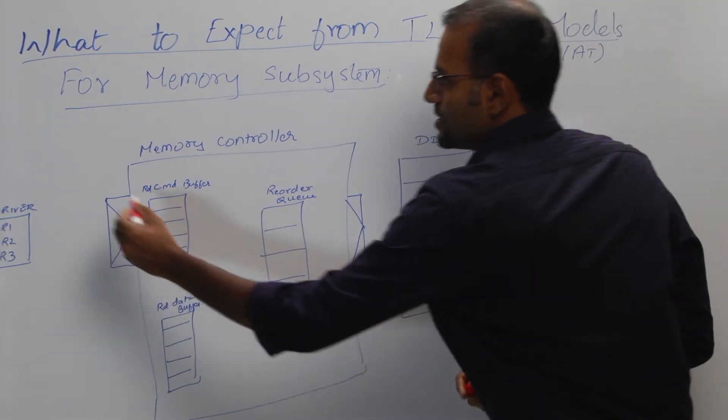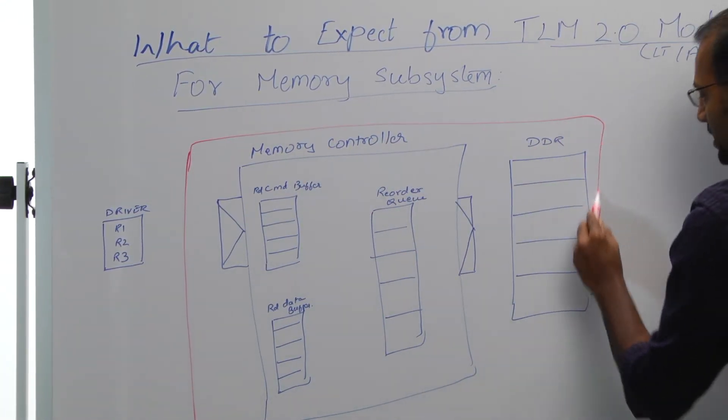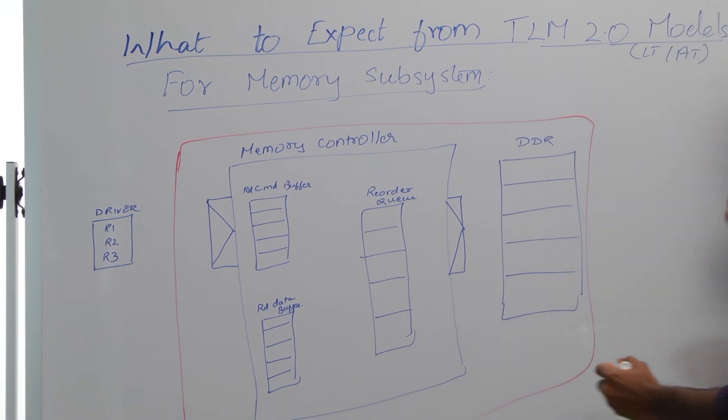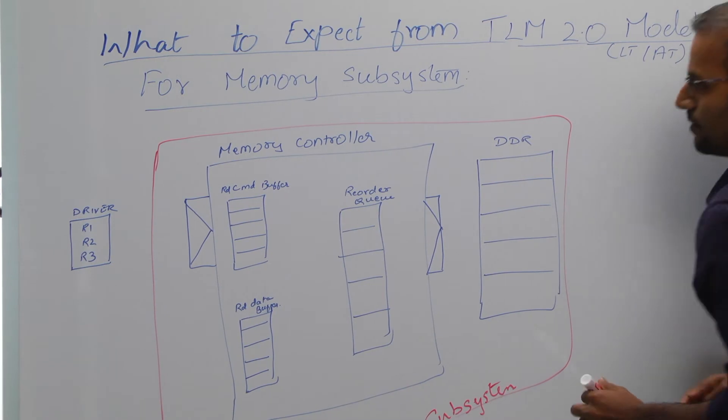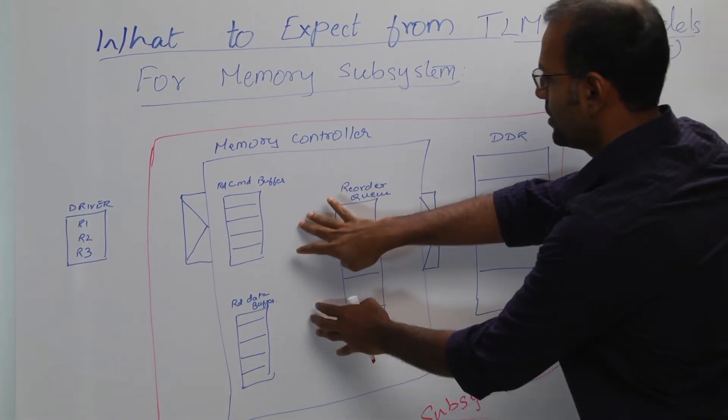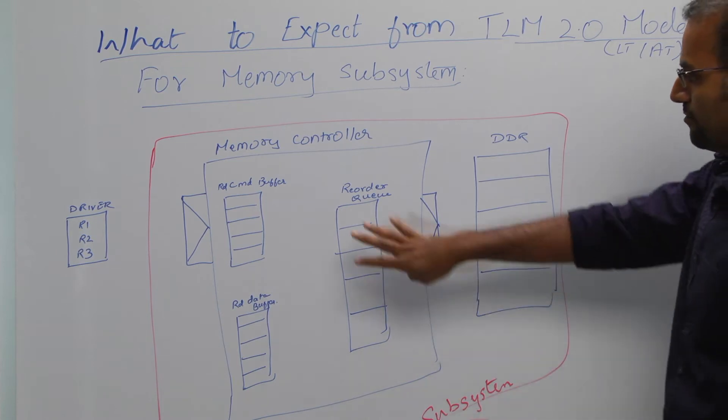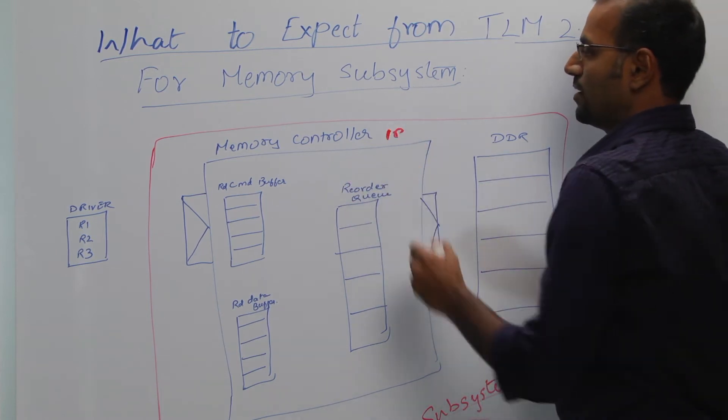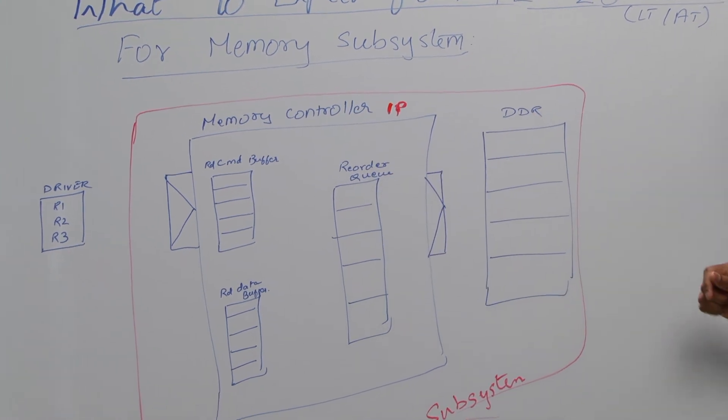This is a very high level abstraction of your memory subsystem. What I have here is a memory controller and the memory, which is the DDR. This is Cadence Memory Controller IP, but I've abstracted it to the point to just get this message across.